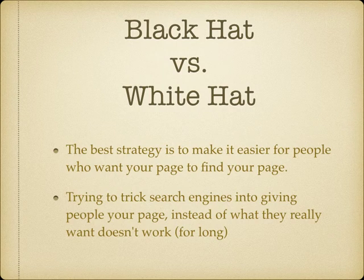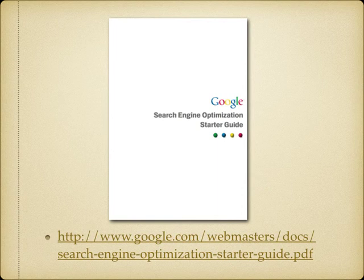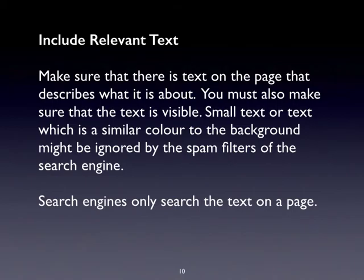You can have local search engine optimization and external search engine optimization. We're mostly interested in the local kind — things we can do ourselves. Although much of what Google does is part of its secret sauce, they have produced a document with guidelines. If Google tells us they're using X, Y and Z to rank pages, that's information we can certainly use.